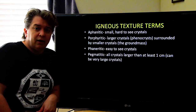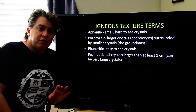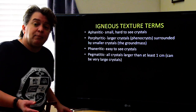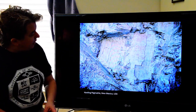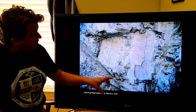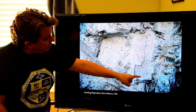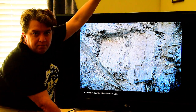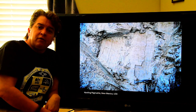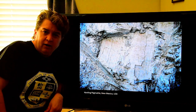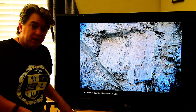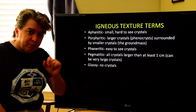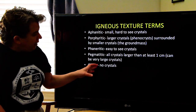Pegmatitic textures are where all the crystals are larger than at least one centimeter — but usually they're going to be really big. Right here, this is a pegmatite from New Mexico. These are feldspar crystals — that's the top of my hammer for scale — so these feldspar crystals are this big, and some of the feldspar crystals I've seen there are like 15 feet long. All crystals in a pegmatite have to be bigger than at least a centimeter.